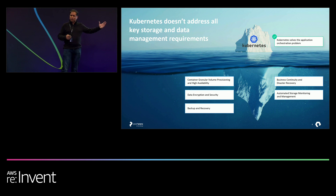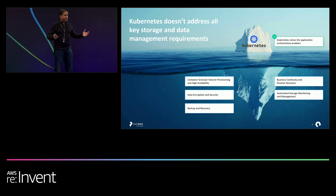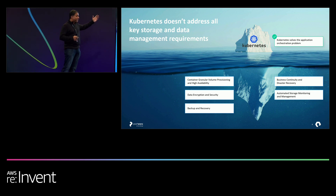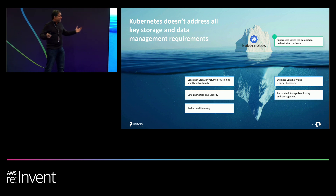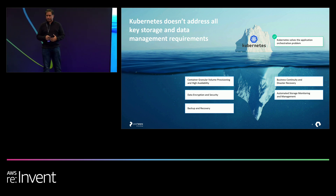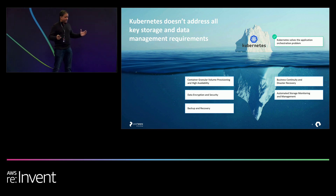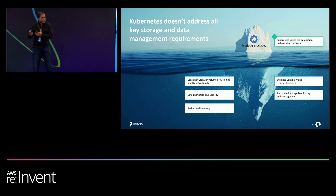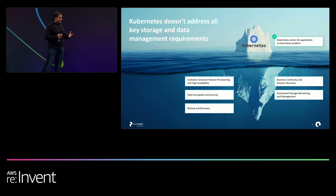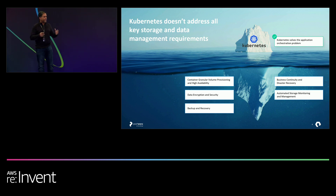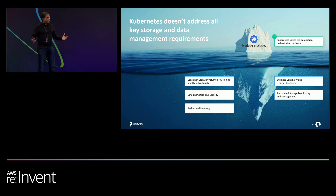But Kubernetes does not alone solve everything. It solves what's on top of the iceberg — the tip: application orchestration. But there's a ton of things that happen underneath, like how do you provision storage? How do you enable disaster recovery? How do you control costs? How do you scale your infrastructure? There's a ton of things that have to come together for your applications to run resiliently in the cloud.